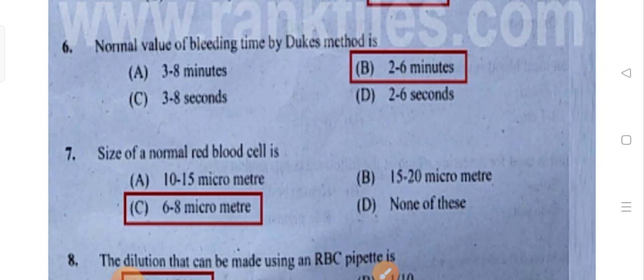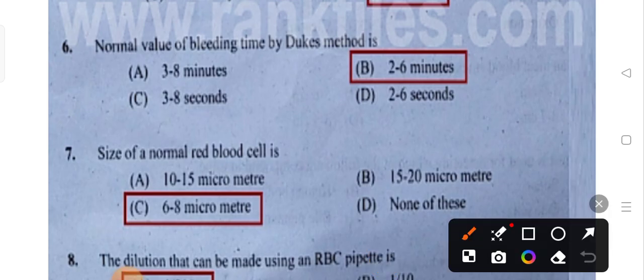Normal volume of bleeding time by Dukes method. So normal bleeding time — if you got any injury, automatically the blood will come; when does the blood clot? The normal bleeding time by Dukes method is 2 to 6 minutes.